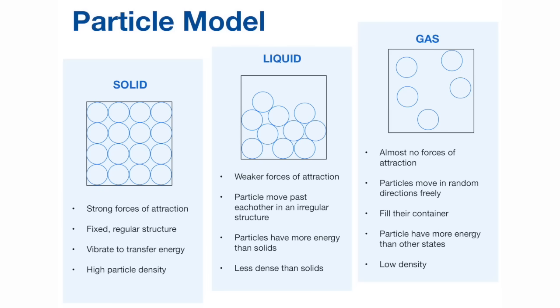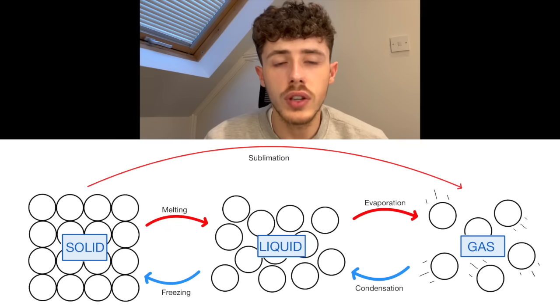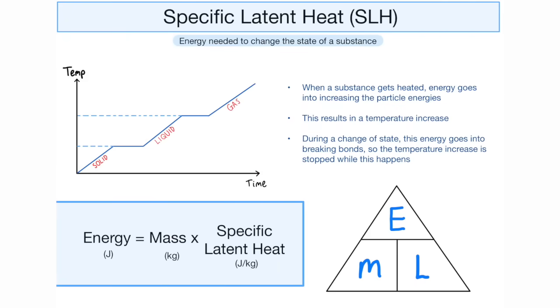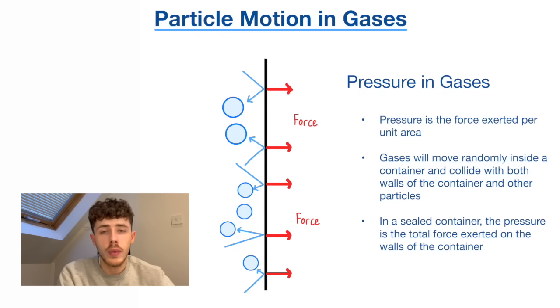On to topic number three: the particle model of matter. First of all, solids, liquids, and gases — something you probably would have learned since about year seven. Next we have density, which has an equation and is basically a measure of the amount of stuff that is in a certain volume. Different substances can change state at different temperatures, and it is very important to know the scientific words for when a substance goes from one state to another. Next we have specific latent heat, which is the amount of energy required to change the state of one kilogram of a substance without changing its temperature. The final subtopic is particle motion in gases, which talks about how pressure is evaluated in gases — it is measured by the number of collisions the gas particles have with the walls of its container.